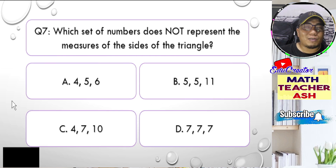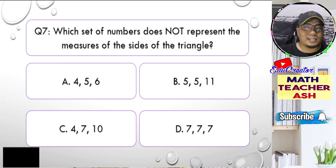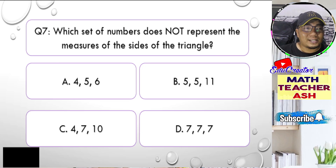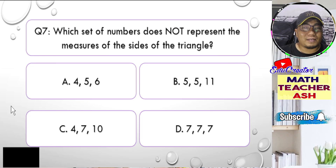Now let's go to question seven. Which set of numbers does NOT represent the measures of the sides of a triangle? Is it A, 4, 5, and 6; B, 5, 5, 11; C, 4, 7, and 10; or D, 7, 7, 7? I'll give you five seconds to think about your answer.